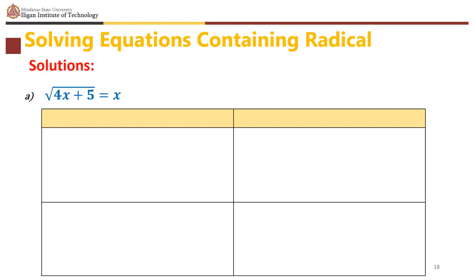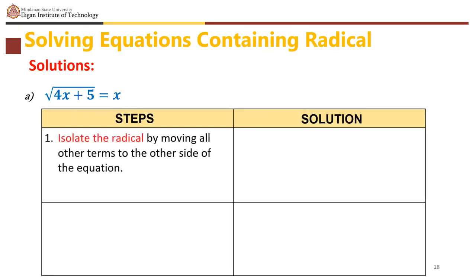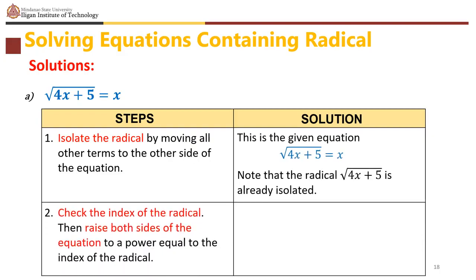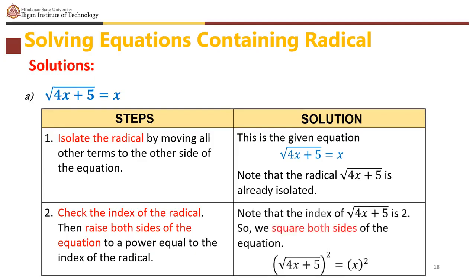For the square root of (4x plus 5) equals x: the radical is already isolated. The index is 2, so square both sides: (square root of (4x plus 5))² equals x². This gives 4x plus 5 equals x squared. Rearranging: x squared minus 4x minus 5 equals 0.